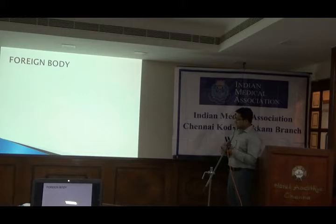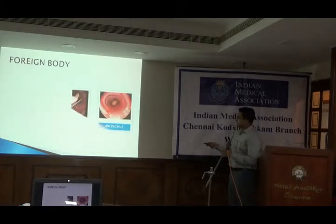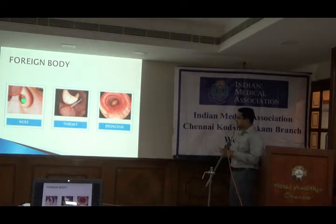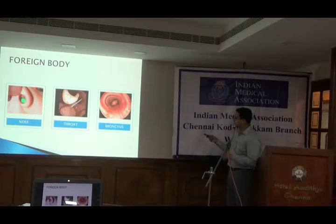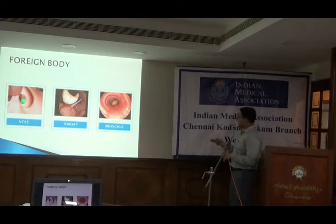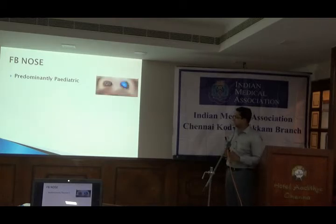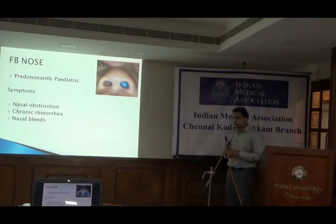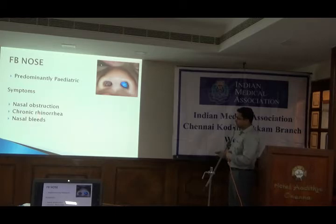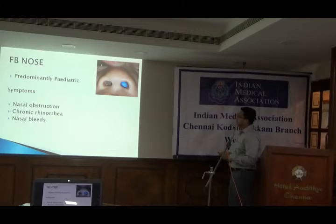Foreign bodies in ENT are of three entities: foreign body nose, foreign body throat, and foreign body bronchus. Foreign body nose is predominantly a pediatric problem. Most commonly a child will present with nasal obstruction, nasal discharge, or sometimes nasal bleed — but it will always be unilateral. So when there is a unilateral nasal obstruction with rhinorrhea or nasal bleed, the first diagnosis to be ruled out should be foreign body nose.